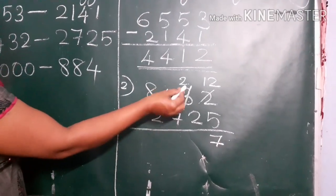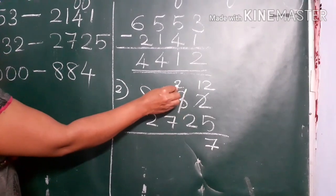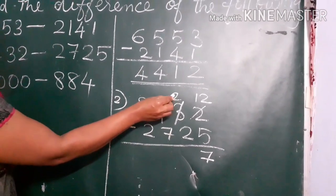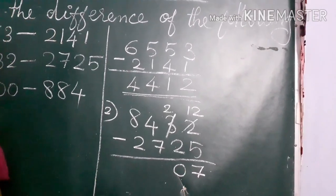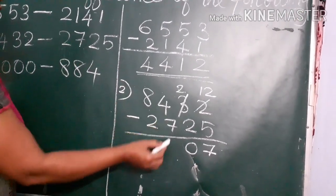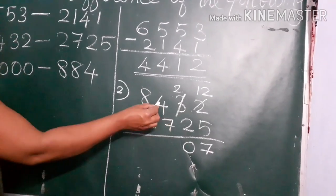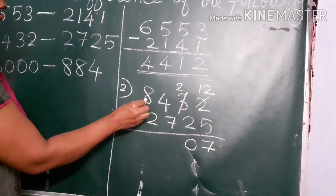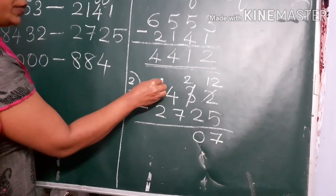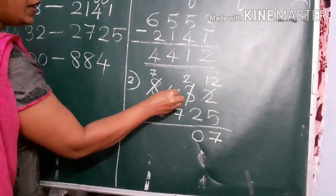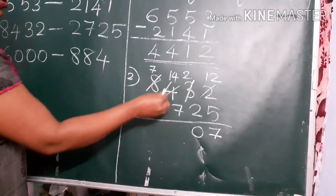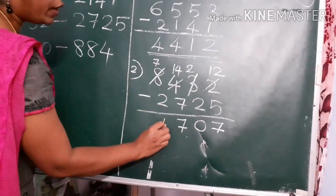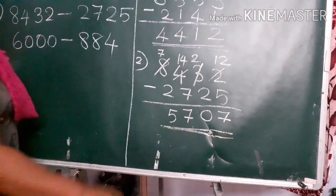What is the tens place number now? 3 reduced to 2. The new number is 2 — 2 minus 2, answer is 0. The next number: 4 and 7. 7 is bigger than 4, so we borrow from the nearest place — from 8. 8 will become 7 and 4 will become 14. Now 14 minus 7 is 7, and 7 minus 2 is 5. This way we can subtract and get the answer.